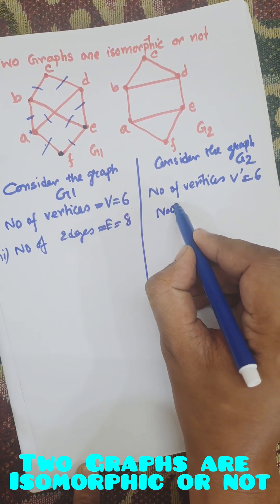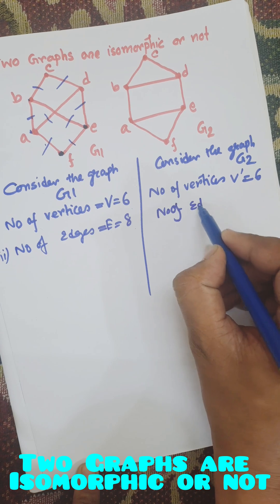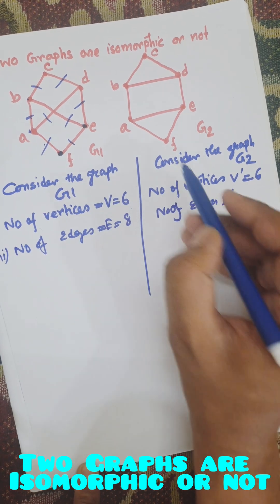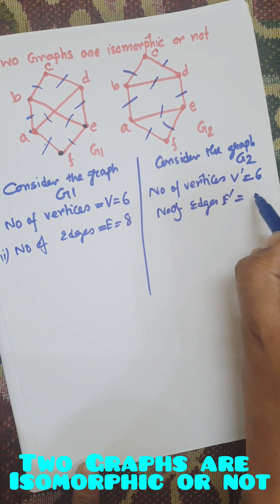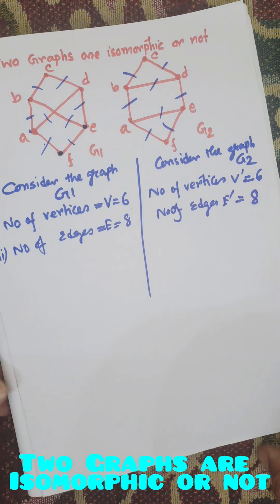Number of edges V dash, 1, 2, 3, 4, 5, 6, 7, 8. So vertices are equal, edges are equal.